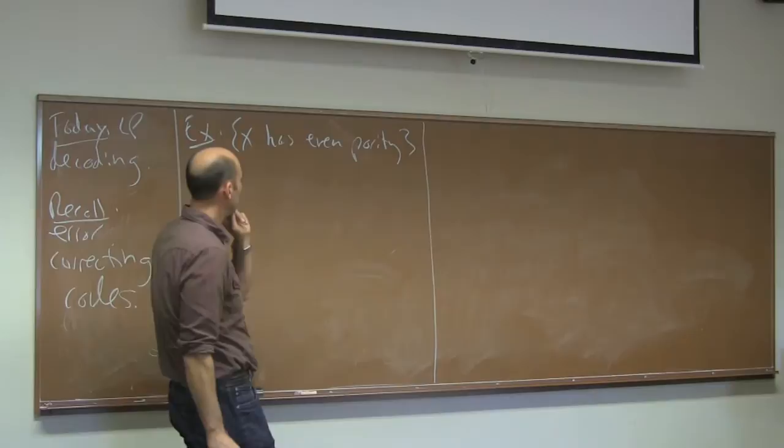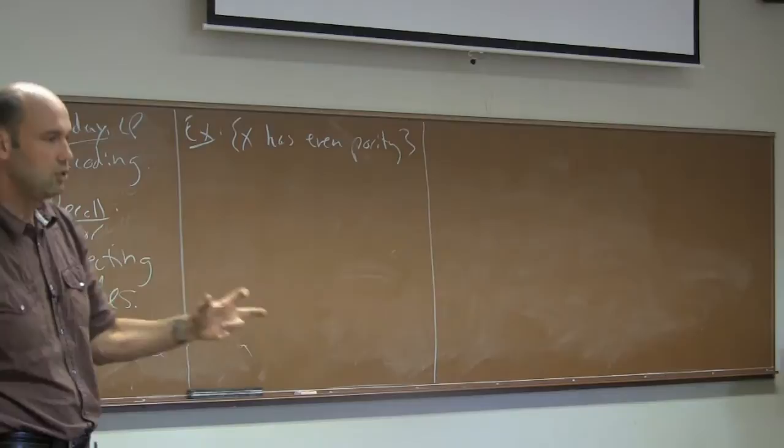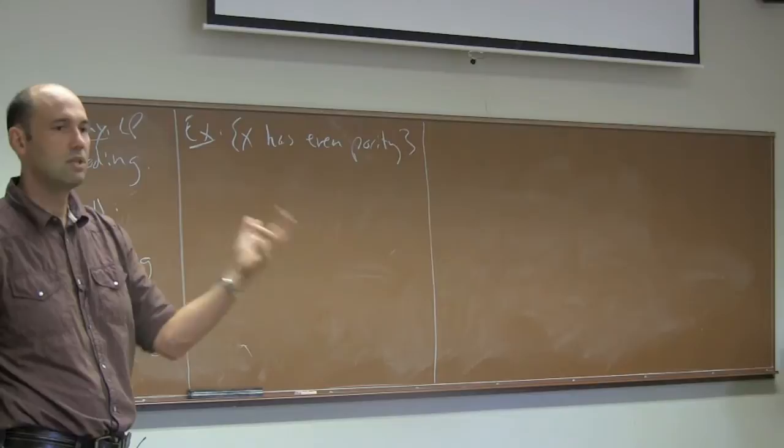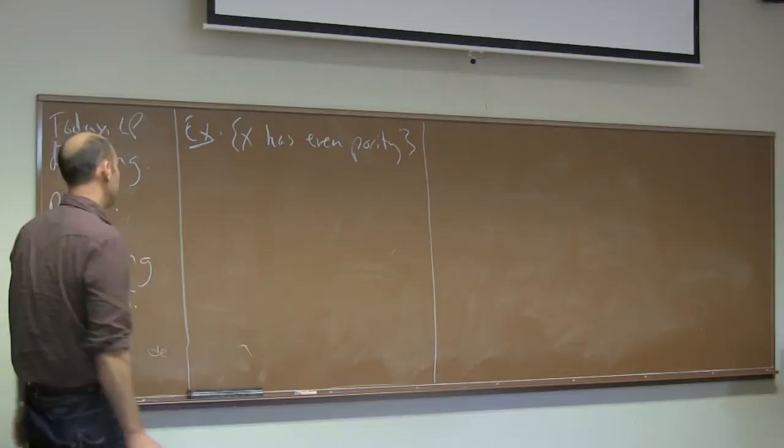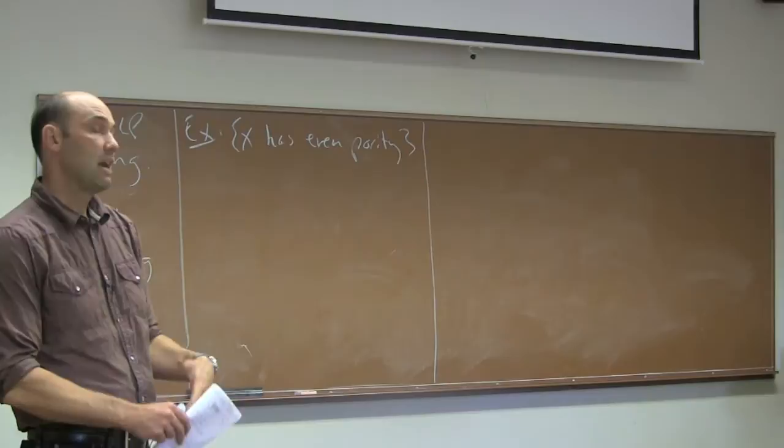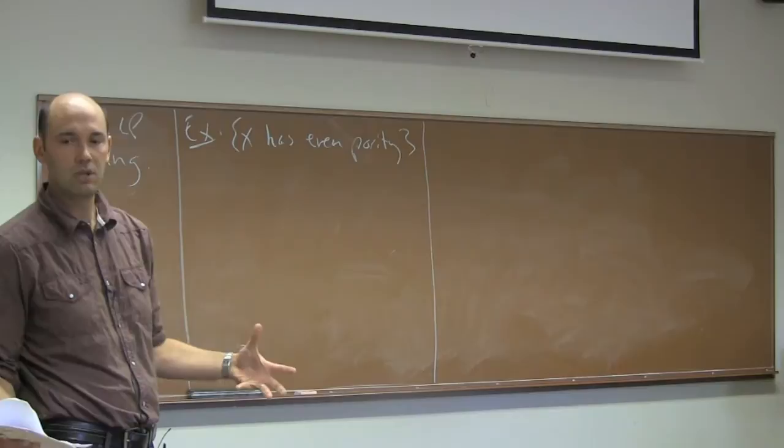The point of this lecture is to study the computational problem of, given a corrupted code word, efficiently reconstructing the nearest code word. Continuing the theme of recent lectures, we're going to ask when you can do this via linear programming. There's going to be a quite nice, non-trivial linear relaxation of this problem, and we'll again be seeking conditions under which this linear program is exact.